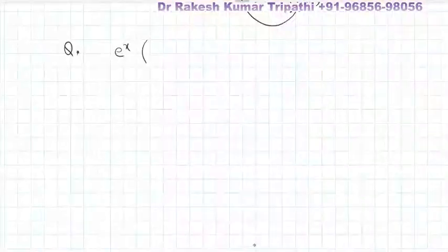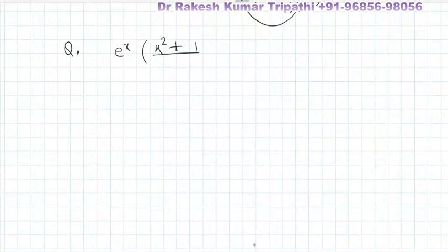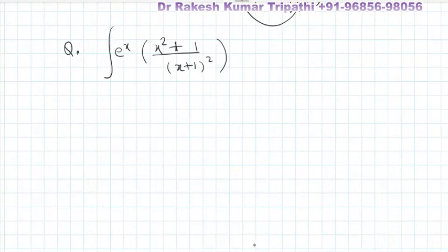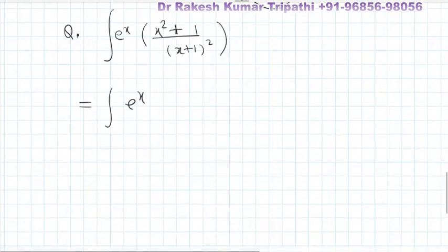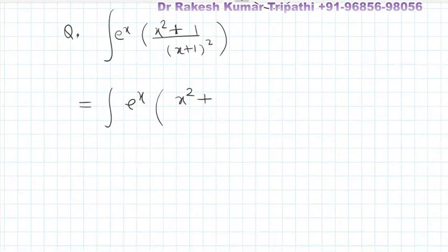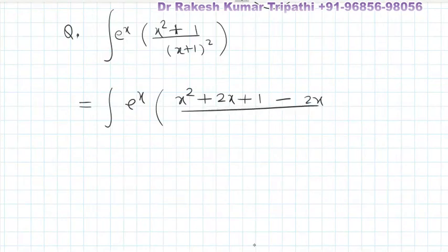Consider the integral e to the power x, (x squared plus 1) upon (x plus 1) whole square. This integral e to the power x times (x squared plus 1) can be written as x squared plus 2x plus 1 minus 2x, all over (x plus 1) whole square dx.